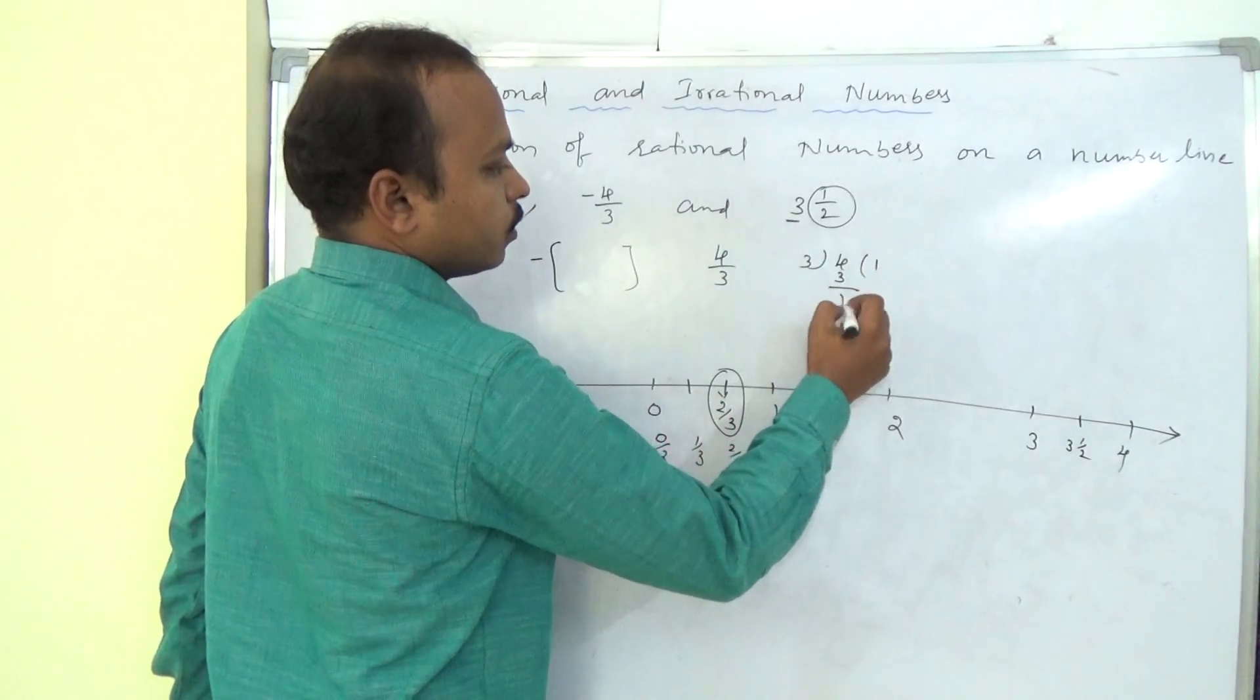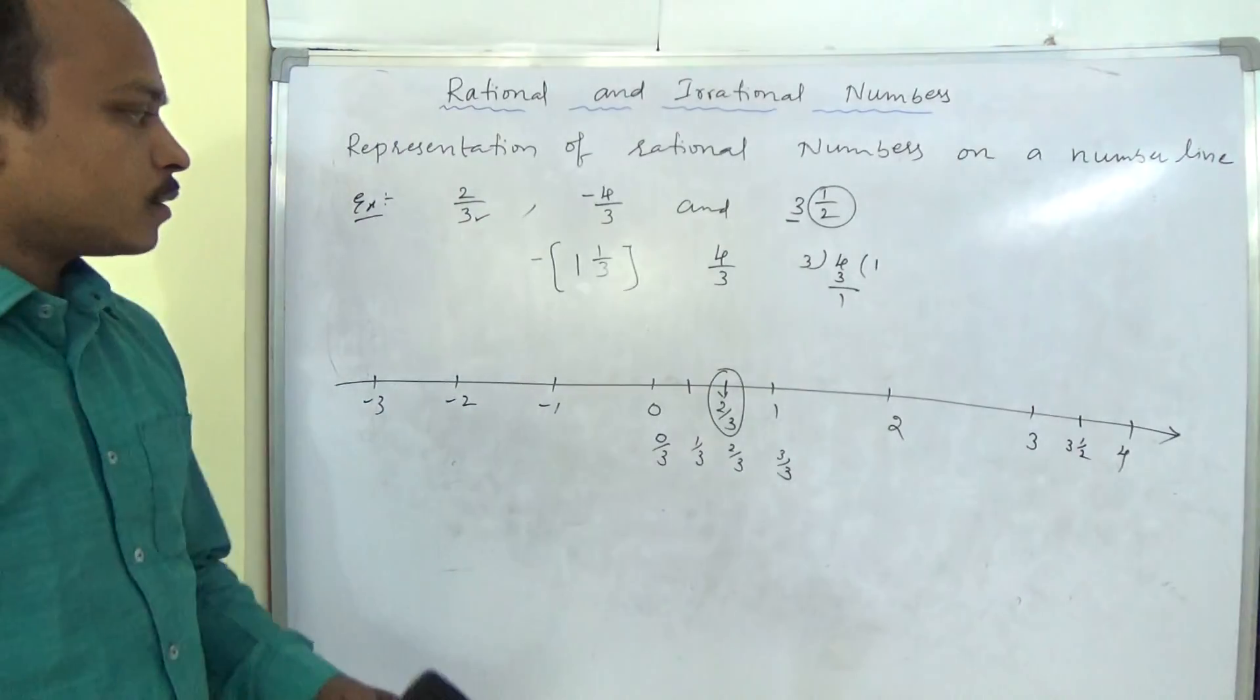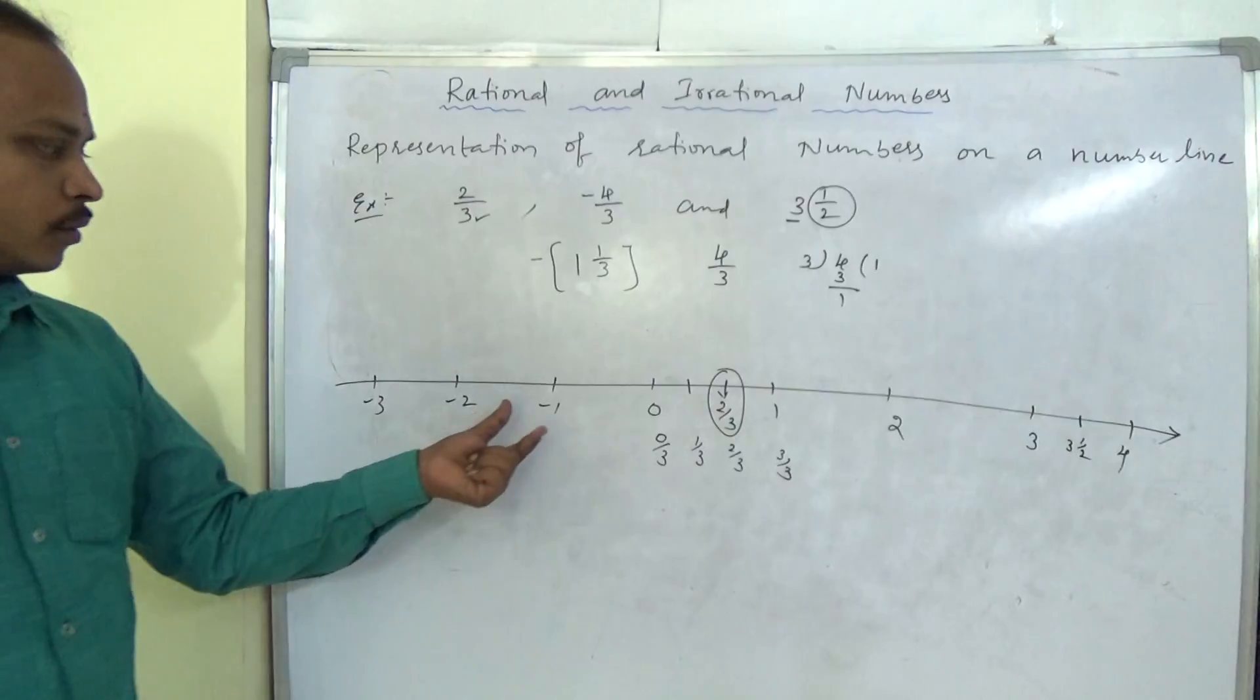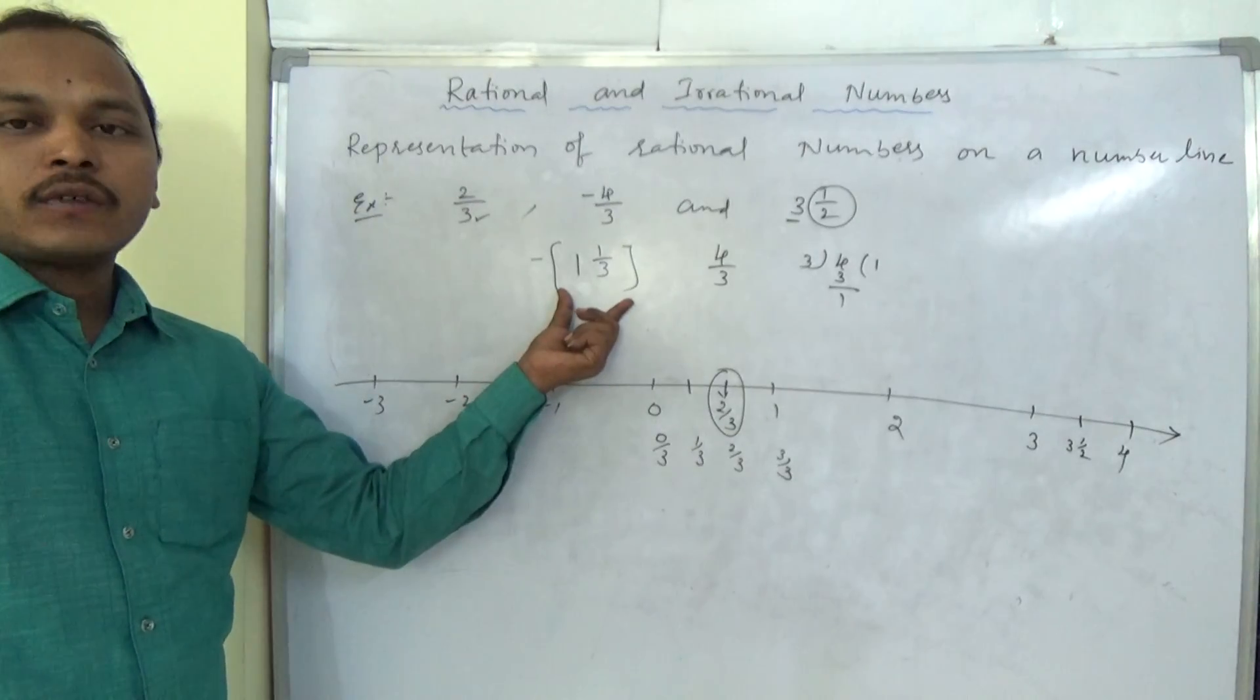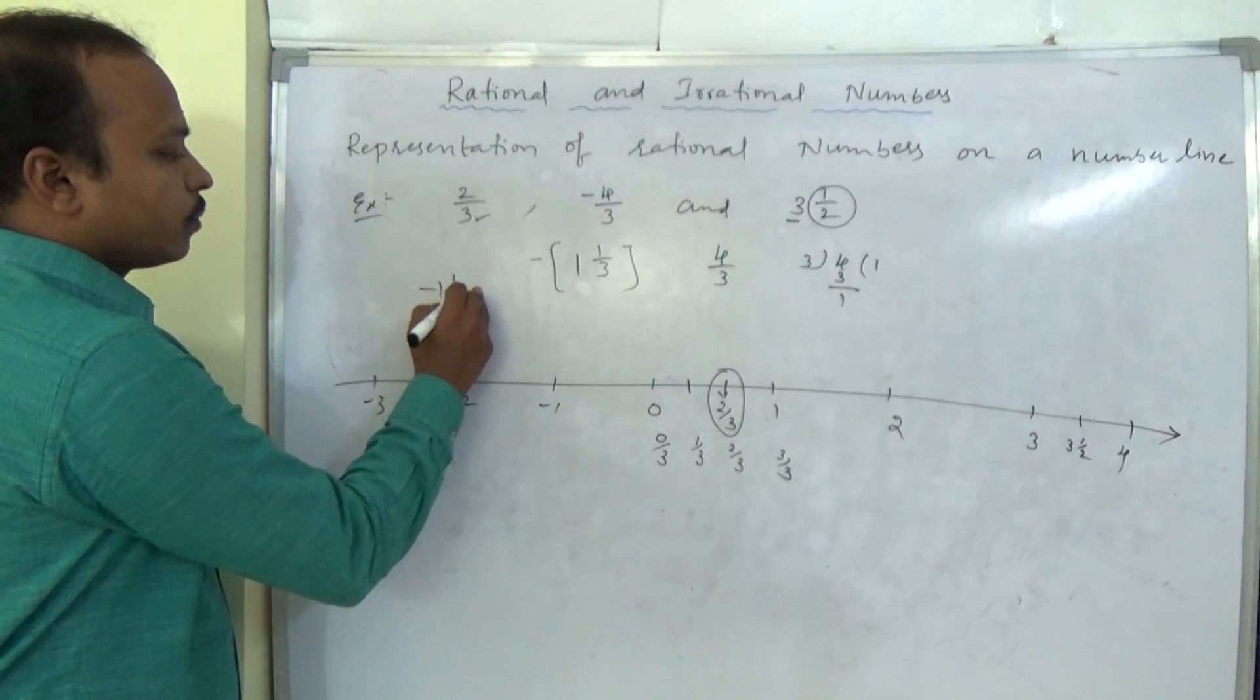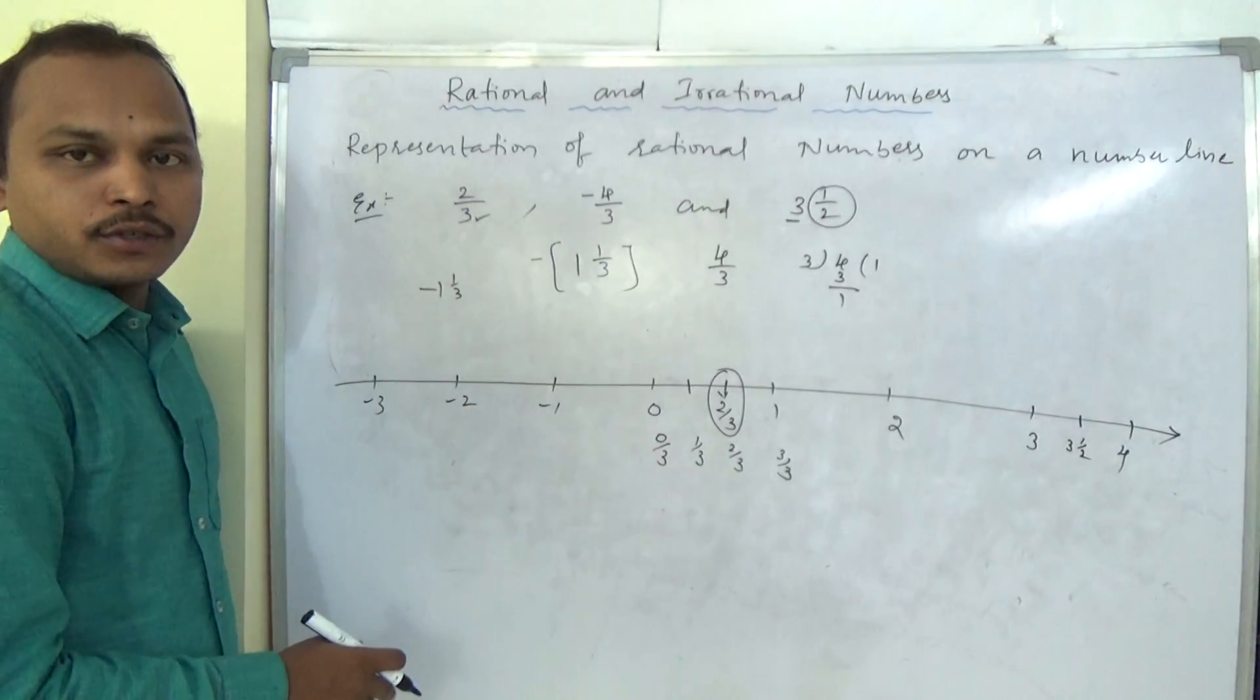So what comes? 3, 1, 0, 3. 1, 1 by 3. This is minus 1, 1 by 3. Negative side. Minus 1, minus 2. In between only, minus 1, 1 by 3 will come. So before minus 1, after minus 2.